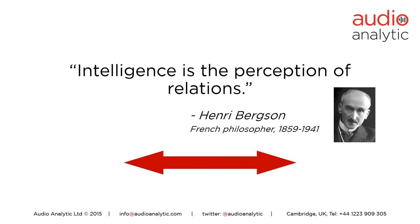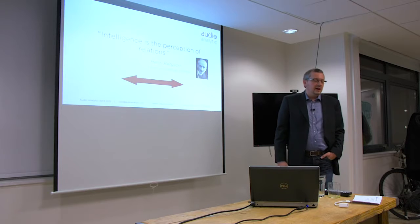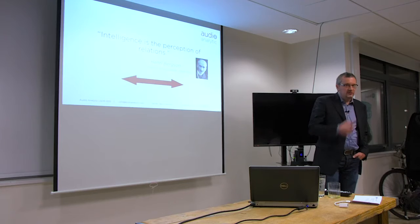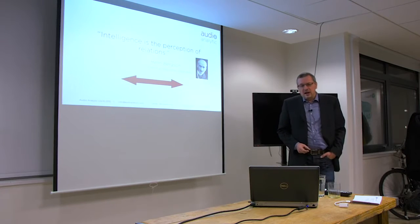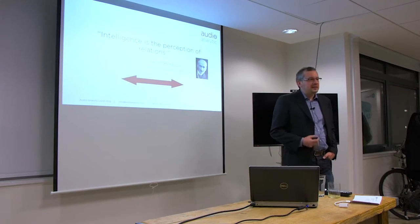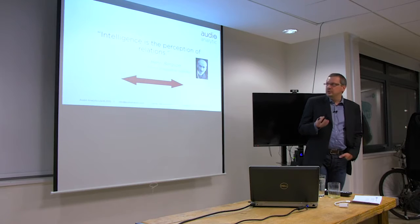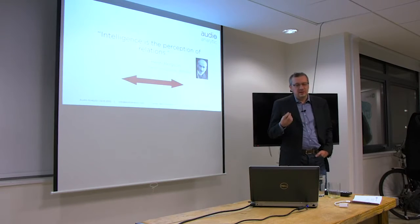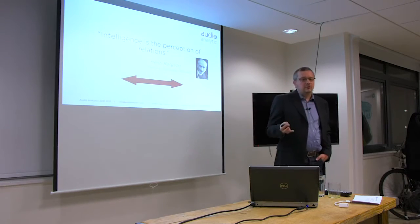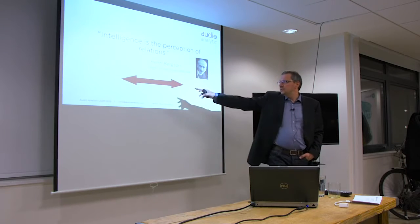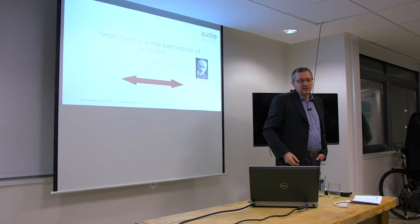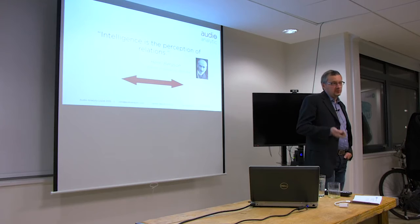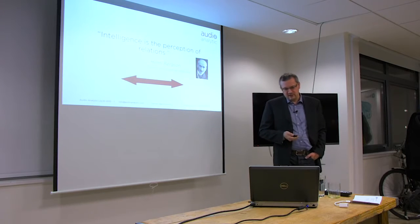I'm going to start with a big statement: intelligence is the perception of relations. That's something said by the philosopher Henri Bergson, who got the Nobel Prize in Literature in 1927. As data scientists, what we're trying to do is get intelligence from data — from experience, from measurements — and that bidirectional arrow symbolizes looking for relations between things and between data quantities.